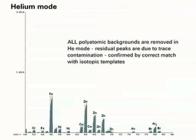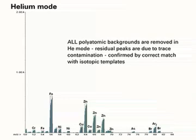Now watch what happens when helium is added to the cell. All matrix-based interferences are removed. The remaining elemental peaks are due to parts per billion level contamination in the matrix. This is confirmed by the correct isotopic template fit.